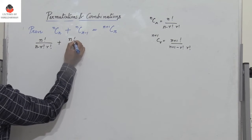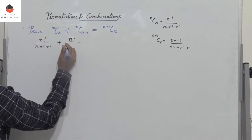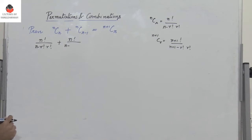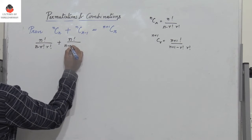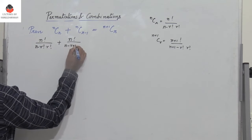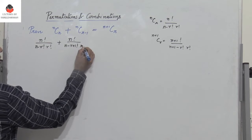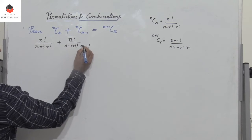For NC(R-1), instead of R we have R minus 1, so the denominator becomes (N minus R plus 1) factorial into (R minus 1) factorial.